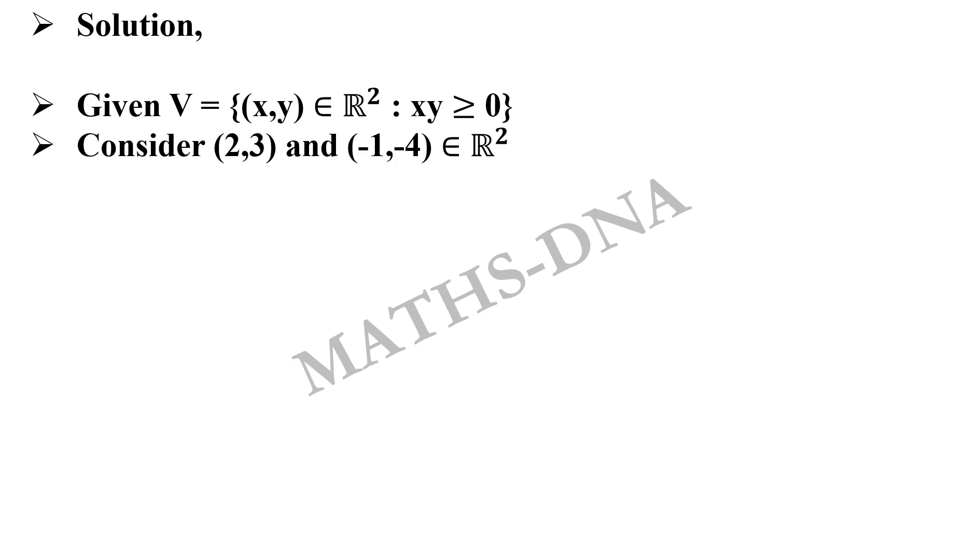So, we take two such elements, (2,3) where 2×3 = 6 ≥ 0, and (-1,-4) where (-1)×(-4) = 4 ≥ 0.